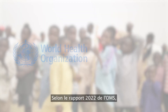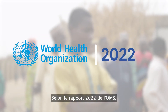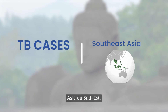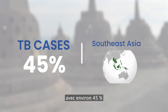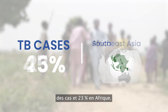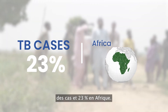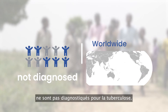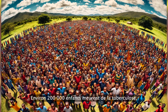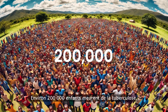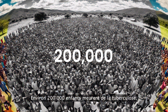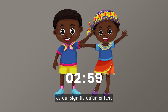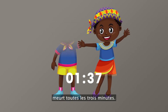According to the WHO paper of 2022, most of the TB cases are found in Southeast Asia — that's about 45% — and about 23% are in Africa. Worldwide, 60% of children are non-diagnosed with TB. So about 200,000 children die of TB, and that translates to one child dying every three minutes.